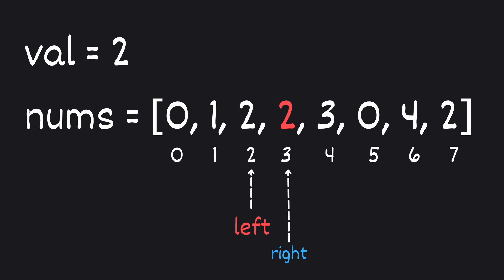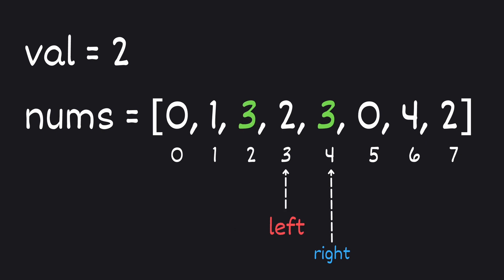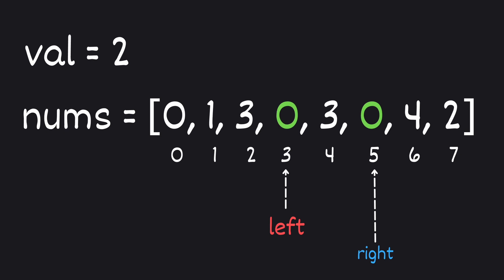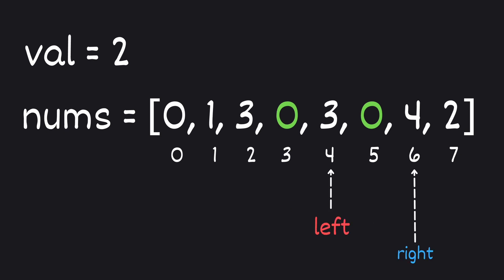Next we see that our current value is again 2, which is our target value. So we keep our left pointer where it is and move our right pointer to the next index, which is 4. On step 5 we have our current item as 3, which is not our target value. So we replace our left pointer value with 3 and move our left pointer to the third index. We also move our right pointer to the next index. On step 6, our current item is 0, which is not 2, so we replace our left item with 0 and move both left and right pointers by 1.